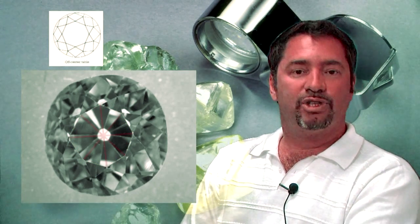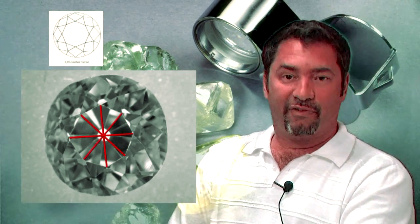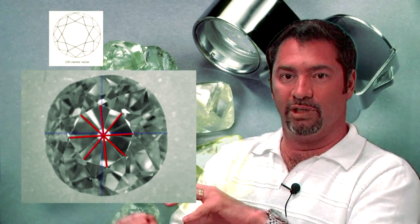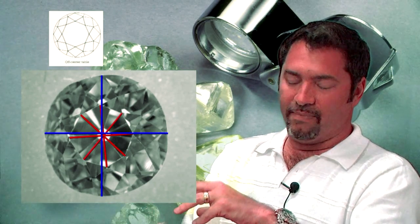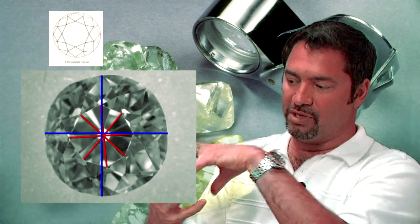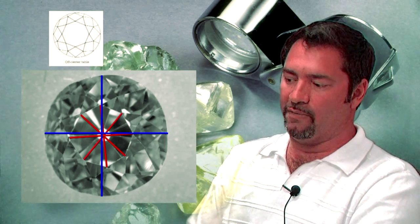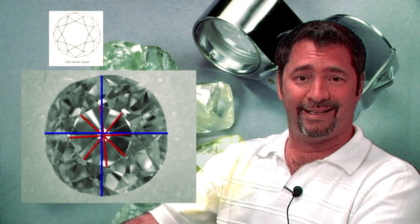This graphic shows a table that's off-centered. The first graphic we saw was of a culet that was off-centered at the bottom of the stone. This one shows the whole top or crown of the stone off-centered. That's not good either.